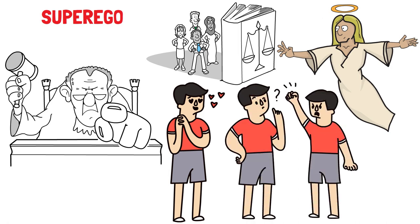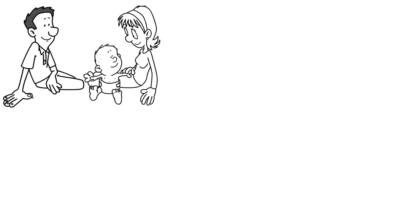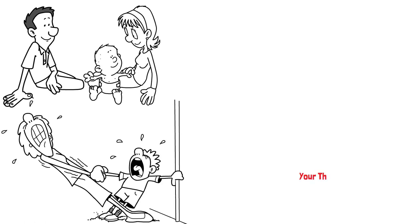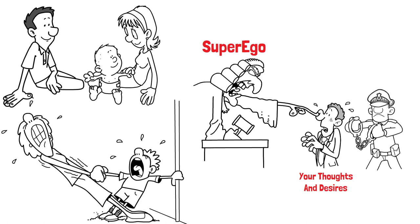The superego develops throughout childhood as we internalize values, beliefs, and rules from our parents, caregivers, and society. It constantly evaluates our thoughts, actions, and desires, holding them up against these established moral standards.